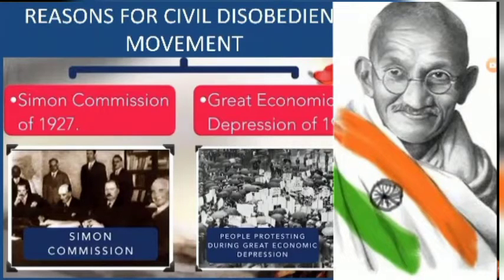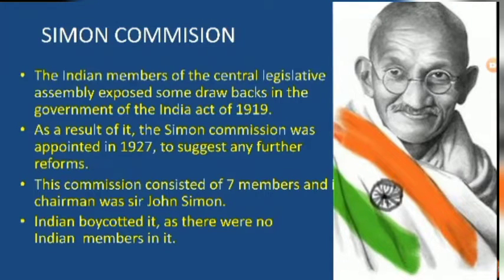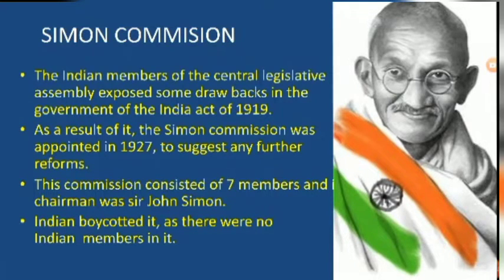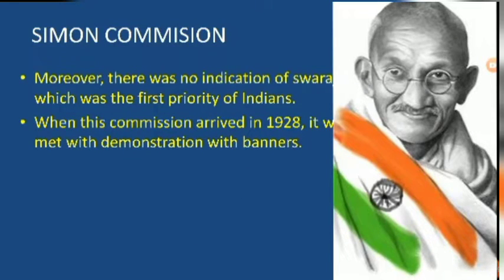The reasons for the Civil Disobedience Movement include the Simon Commission and the Great Depression. Indian members of the central legislative assembly exposed some drawbacks in the Government of India Act of 1919. As a result, the Simon Commission was appointed in 1927 to suggest further reforms. This Commission consisted of seven members and its chairman was Sir John Simon.